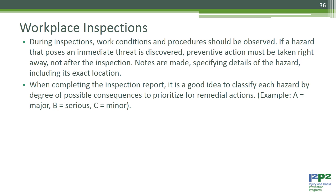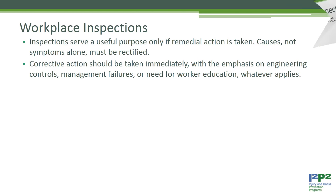Notes are made specifying details of the hazard, including its exact location. When completing the inspection report, it is a good idea to classify each hazard by degree of possible consequences to prioritize remedial actions — for example: A. Major, B. Serious, C. Minor. Inspections serve a useful purpose only if remedial action is taken. Causes, not symptoms alone, must be rectified. Corrective action should be taken immediately with emphasis on engineering controls, management failures, or a need for worker education.